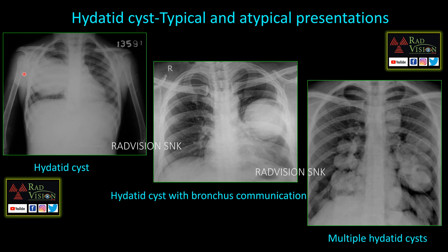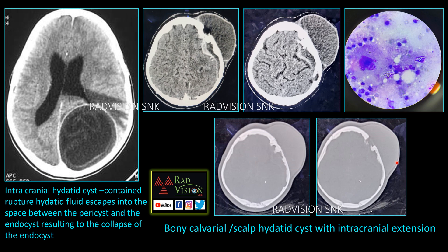These are other typical hydatid cysts in the lung. This is a hydatid cyst with a fluid level noted within, likely representing hydatid cyst with bronchial communication. These are multiple hydatid cysts in the lung. Here is another case showing a cystic lesion in the parietal lobe with typical fluid collection between the pericyst and the endocyst, with detached laminated membranes typically mimicking the water lily sign or water lily appearance.